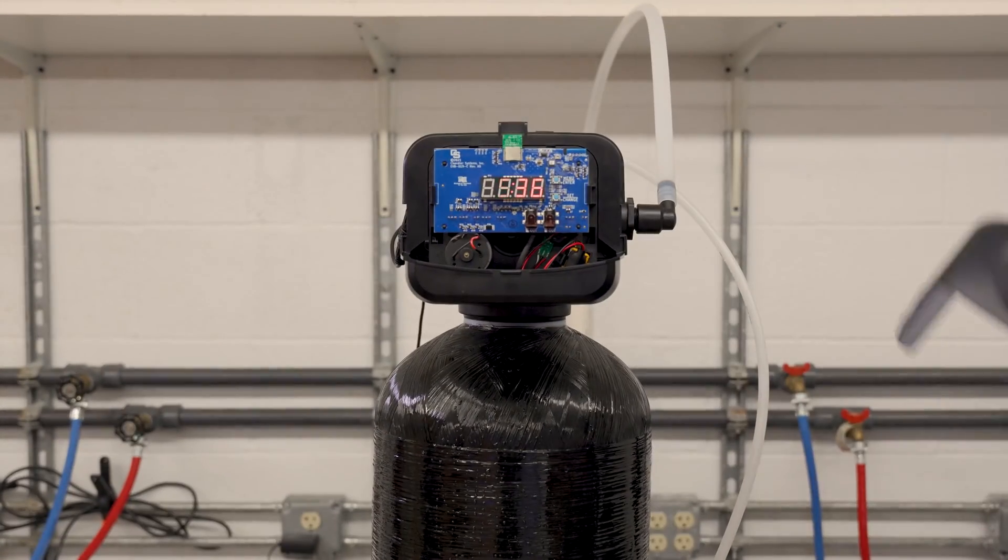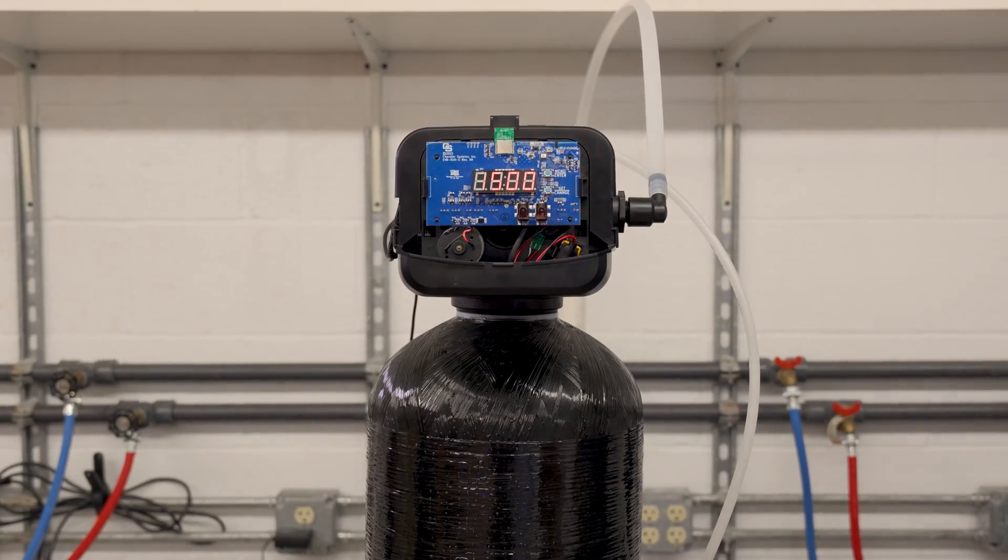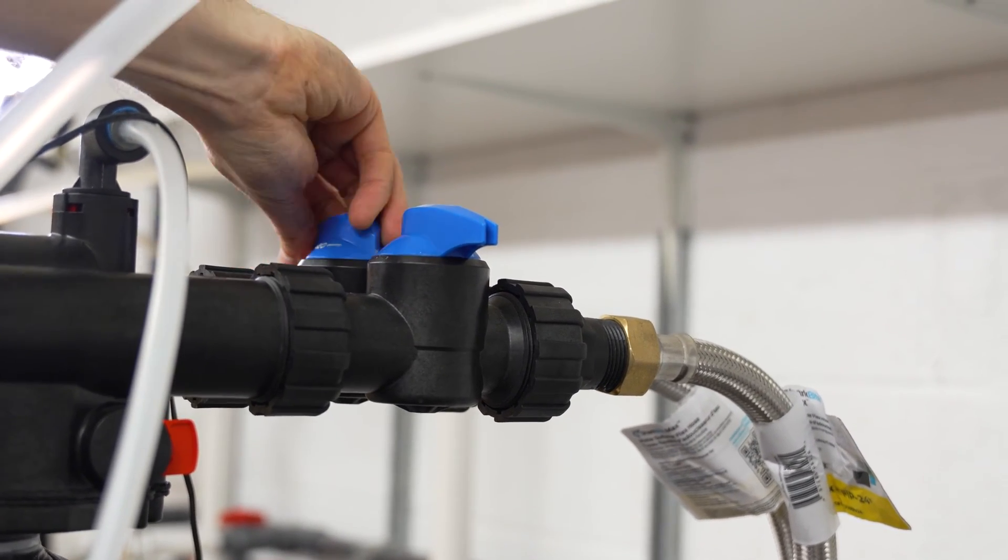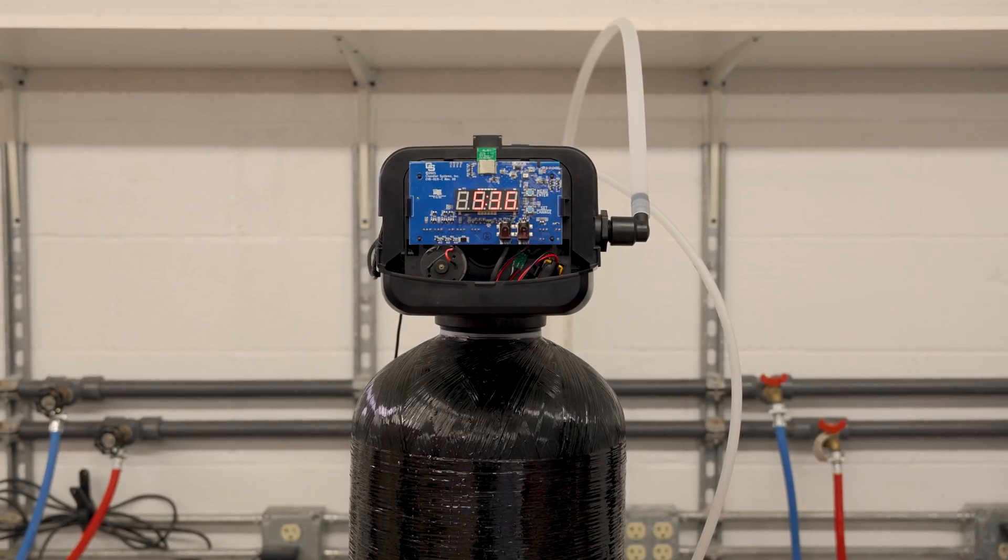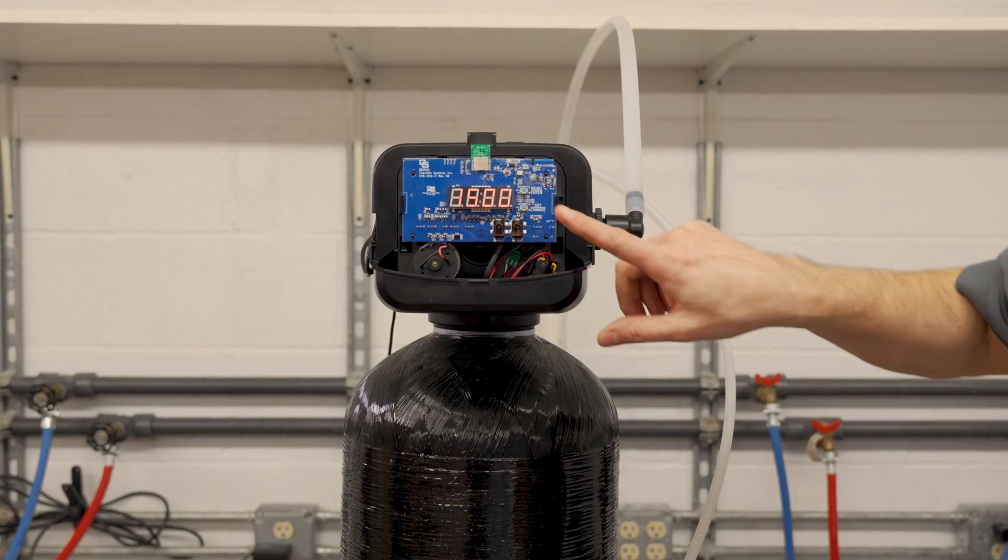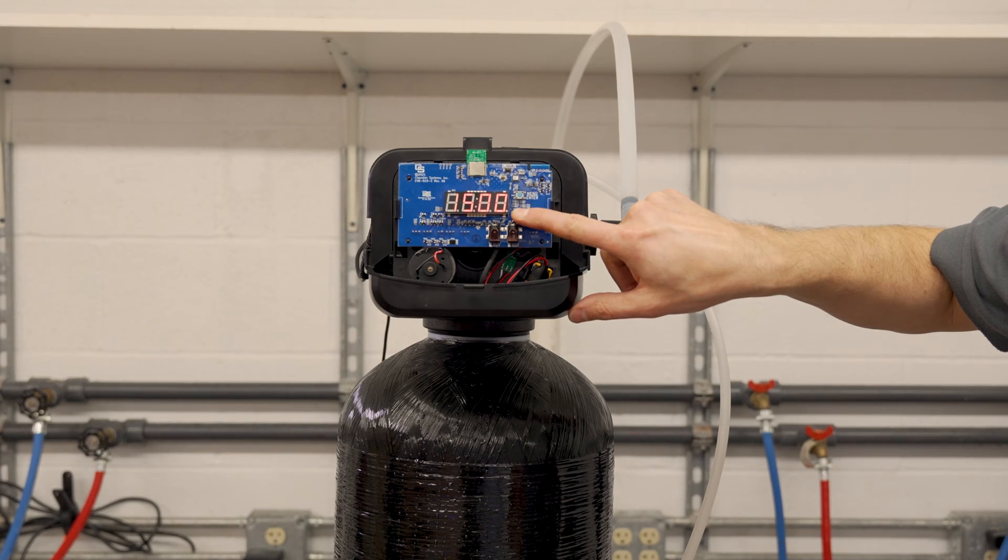Start by removing the cover. Before we start taking anything apart, we want to make sure to put it into bypass and then cycle it to backwash to take pressure off of it. You can do this in the Legacy View app or just by pressing and holding the set change button on the circuit board.